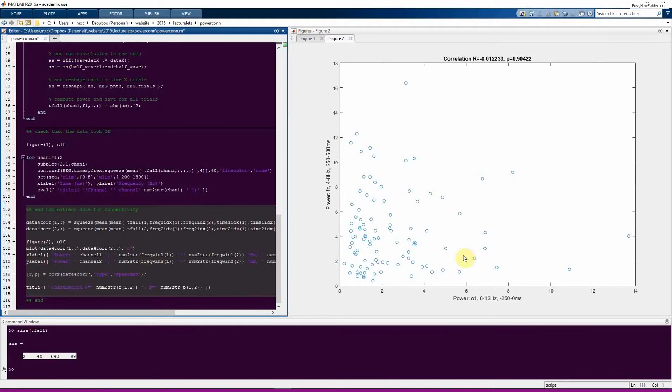So here we see literally no correlation. I mean, it almost could not be any less significant than this. The correlation coefficient is 0.01 and the p-value is 0.9. So that's really no correlation at all. So that's fine, I guess, our hypothesis cannot be confirmed in these data that pre-stimulus occipital alpha predicts post-stimulus frontal theta.